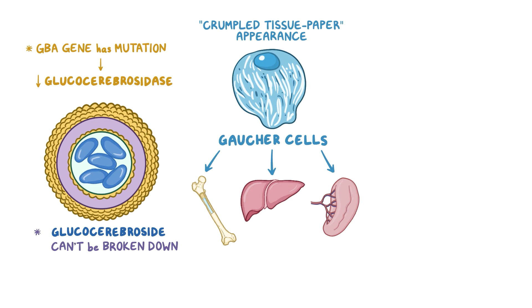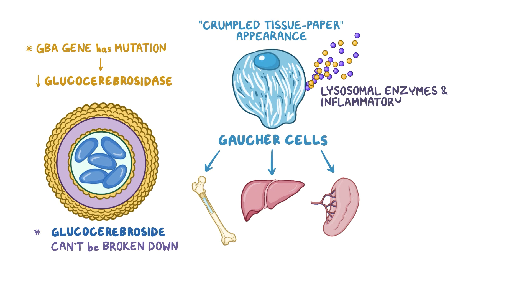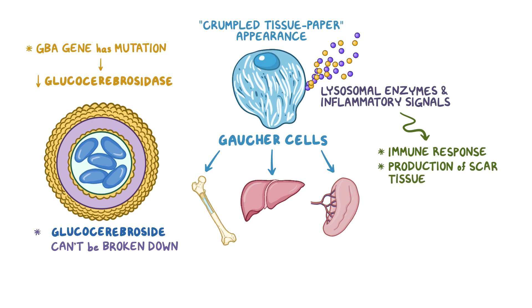While the reason is unclear, Gaucher cells and other nearby macrophages secrete damaging lysosomal enzymes and inflammatory signals into the surrounding area. This causes an immune response and production of scar tissue, resulting in many characteristic signs and symptoms.